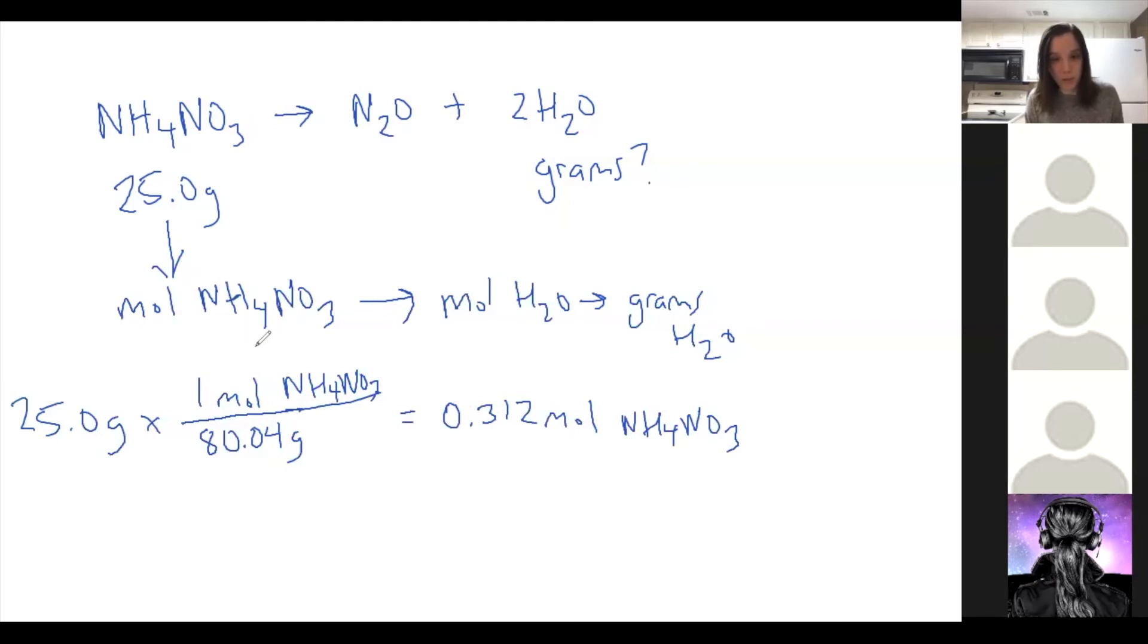Now we want to go from moles of NH4NO3 to moles of H2O. Okay, so the molar ratio in here, there's no number in front here, there's a 2 in front of here. So it's a 1 to 2 ratio. We want to cancel out NH4NO3, so that goes on the bottom. So we do 0.312 times 2, we get 0.624.